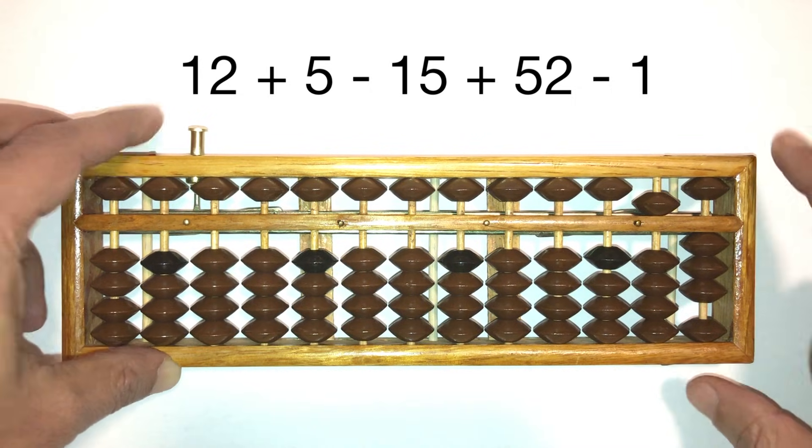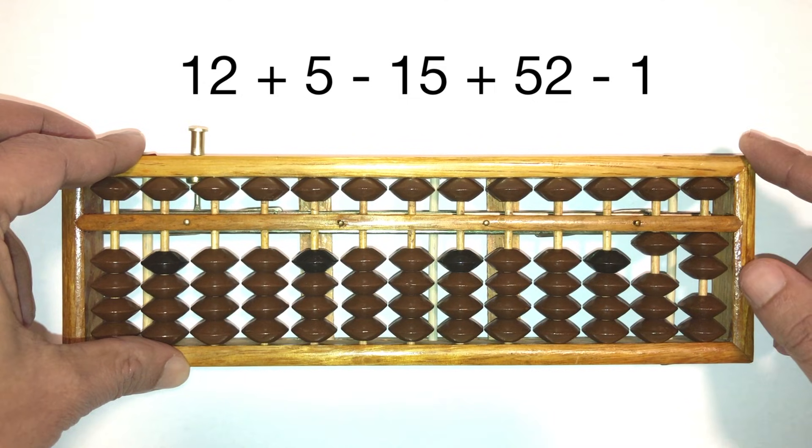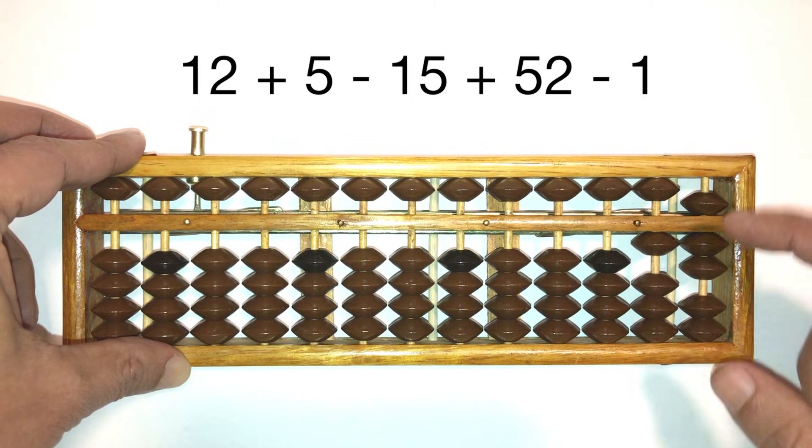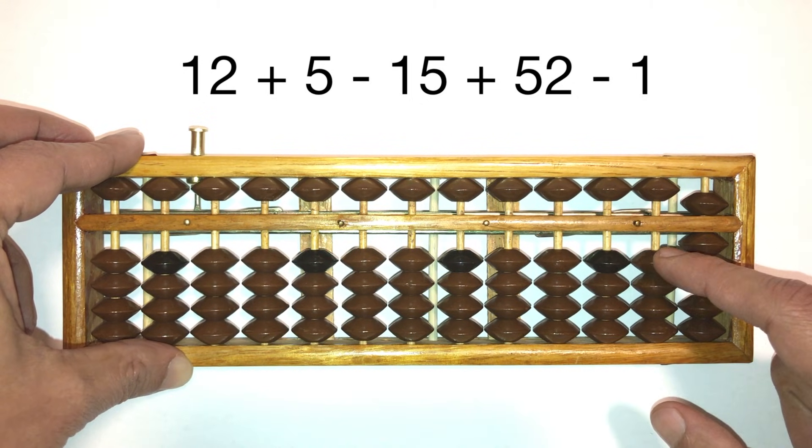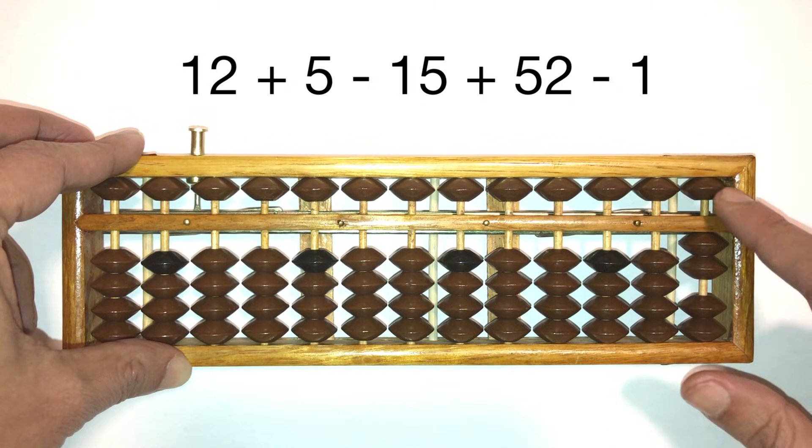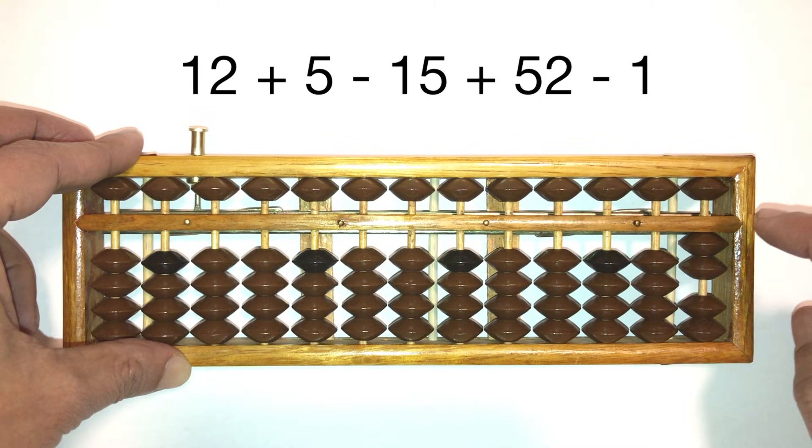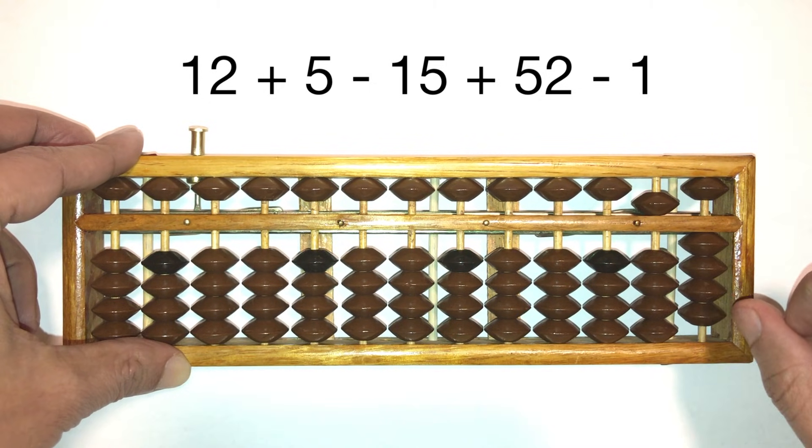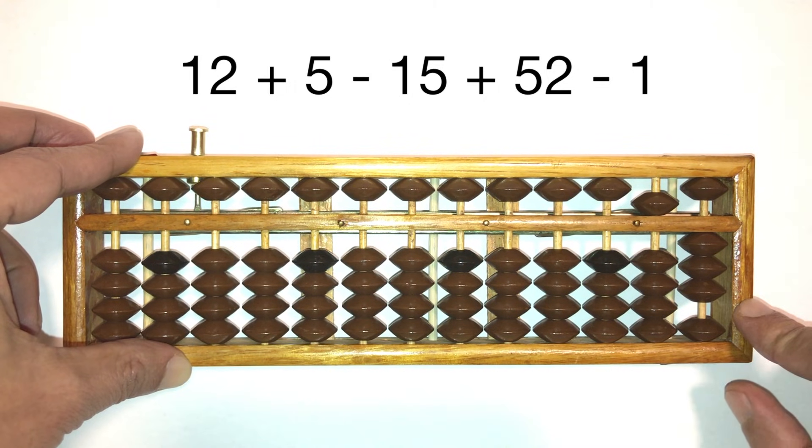Okay? Let's do that again. 12 with our thumb, plus 5, adding with the pointer because it's the upper beads. Taking away 15, so we're taking away the 10 with our pointer. Because the lower beads, you subtract with the pointer. Minus 5 again with your pointer. Because for the upper beads, you always use your pointer. Plus 52, minus 1. The answer is 53.